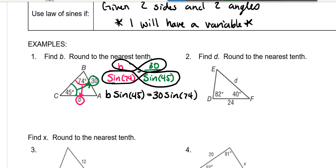So B times the sine of 45 is equal to 30 times the sine of 74. Now we need to get B by itself, so we need to divide, because remember these are being multiplied, divide by the sine of 45 on both sides.